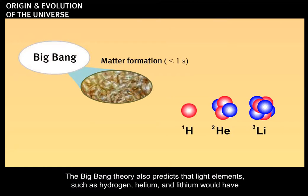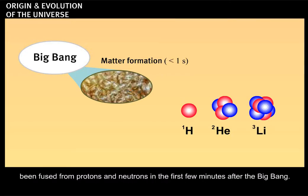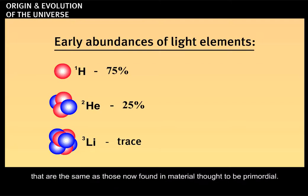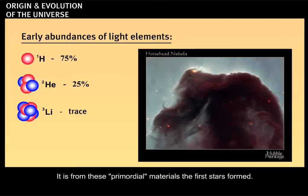The Big Bang theory also predicts that light elements, such as hydrogen, helium, and lithium, would have been fused from protons and neutrons in the first few minutes after the Big Bang. The theory predicts that the Big Bang would have produced these light elements in relative abundances that are the same as those now found in material thought to be primordial. It is from these primordial materials that first stars formed.